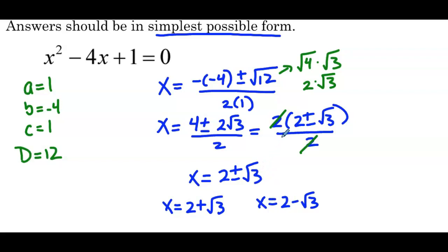Two things on the simplification: first, pay attention to that square root and make sure it's in simplest radical form. Then, if you can take the GCF from the numerator, do that and see if it simplifies with the denominator. I prefer that method over trying to simplify each coefficient individually, because most students will cross out only some of the 2s and come up with an incorrect solution. My advice: take the GCF out, see if it simplifies with the denominator — if it does, simplify and clean up your answer; if it doesn't, go back one step and circle that as your answer.